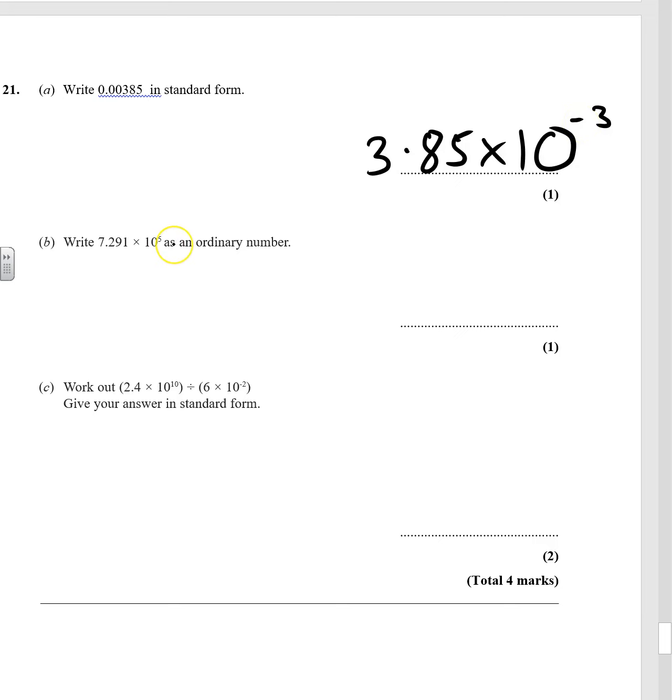OK, now we've got to write it as an ordinary number. So 7291. So it's been multiplied by 10 five times. Well, that's already done three times. Four times, five times. So it's 729,100.